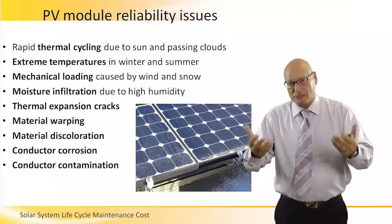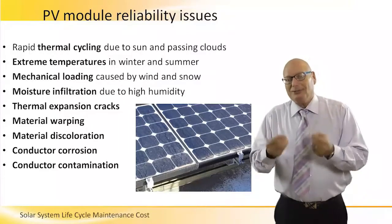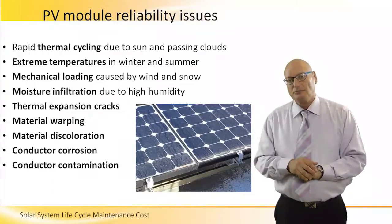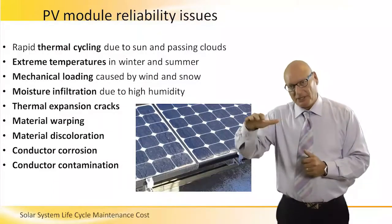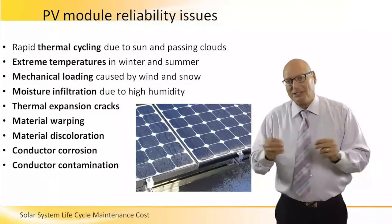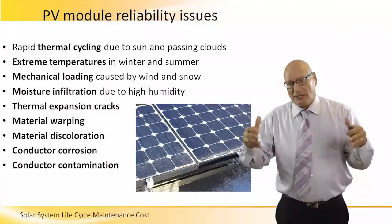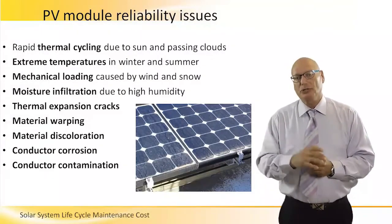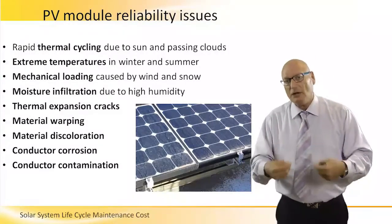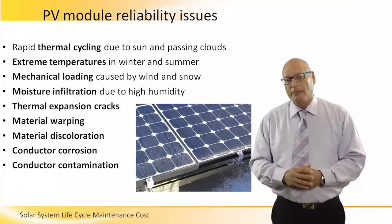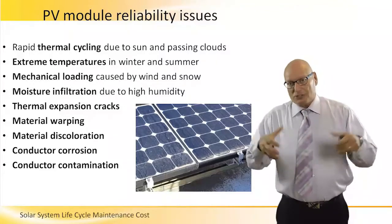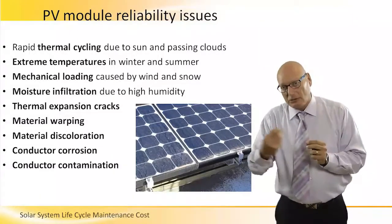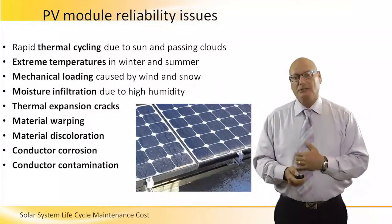Conductor corrosion: the conductors are exposed — not directly to environmental conditions because they are behind a protective glass layer on each panel — but it's not 100% hermetically sealed. So humidity and other materials penetrate under the glass and cause corrosion and contamination to the conductors. Conductor contamination: all these materials that get into the panel change the purity of the metallic conductor material, meaning it will resist current flow.